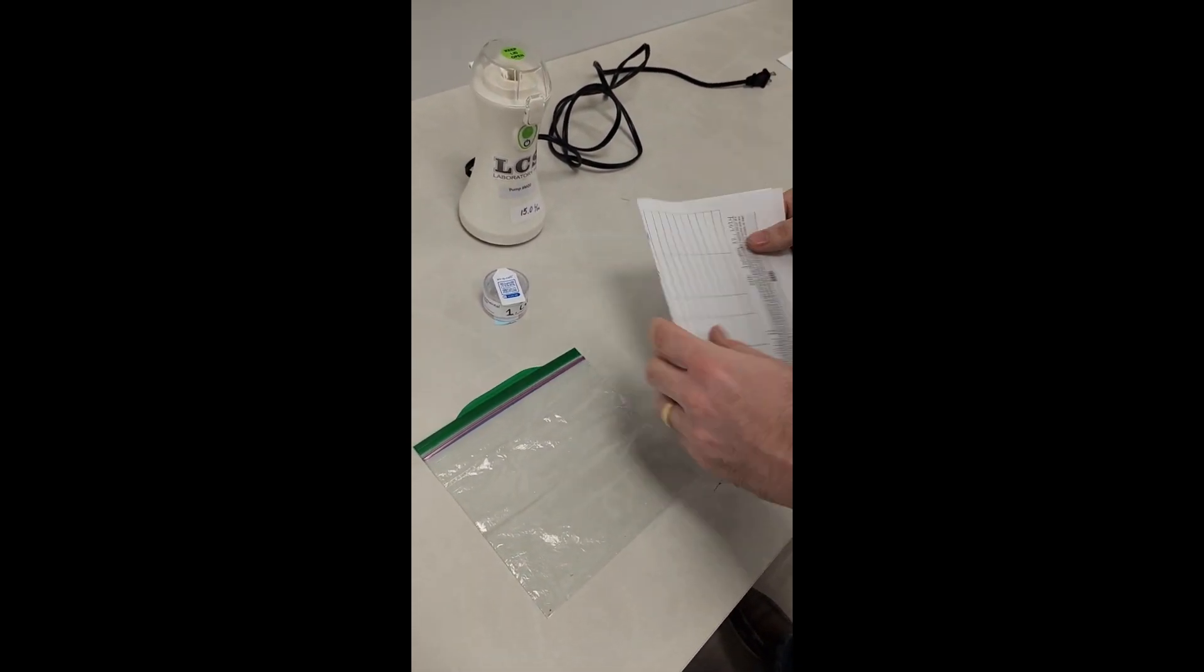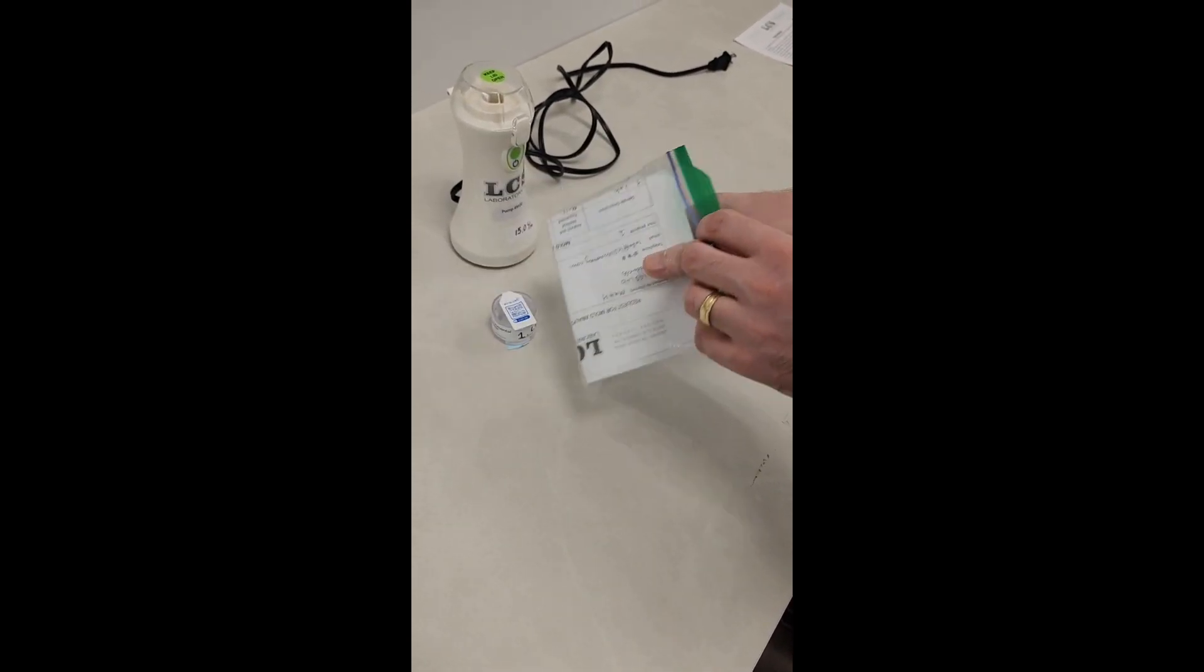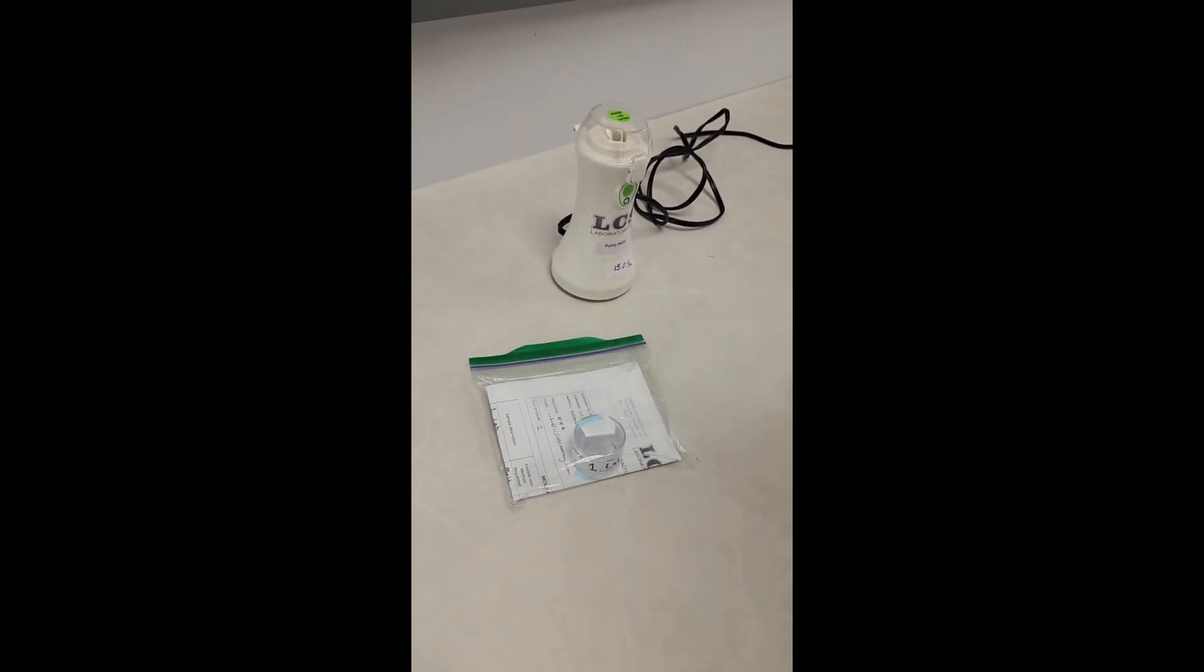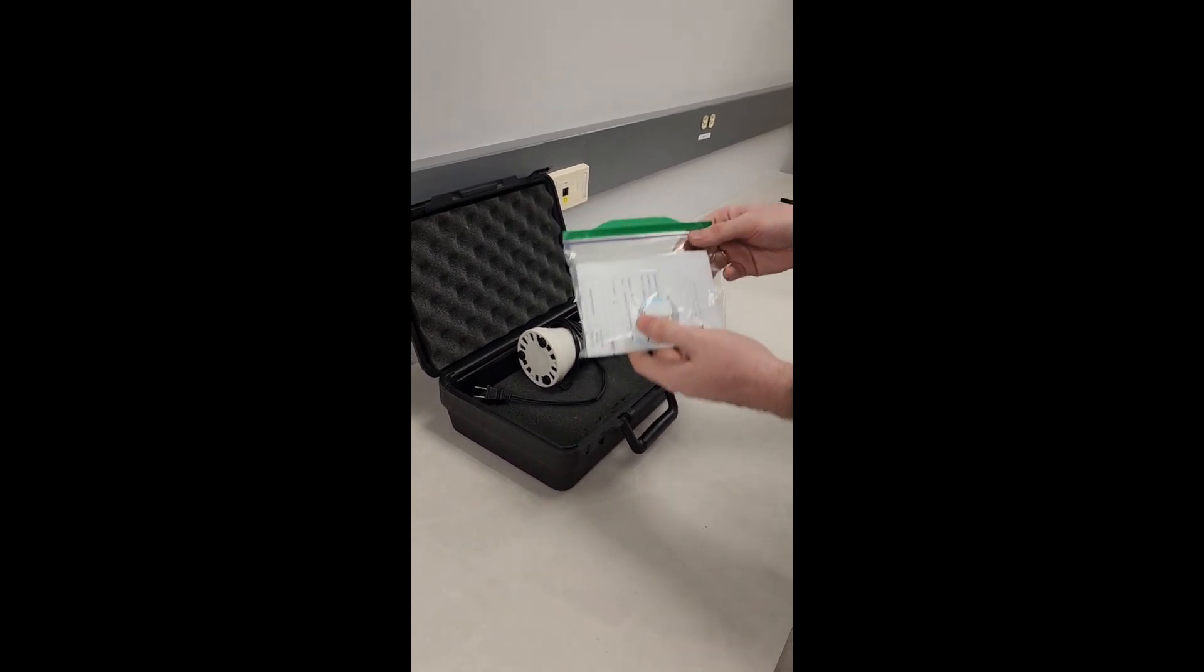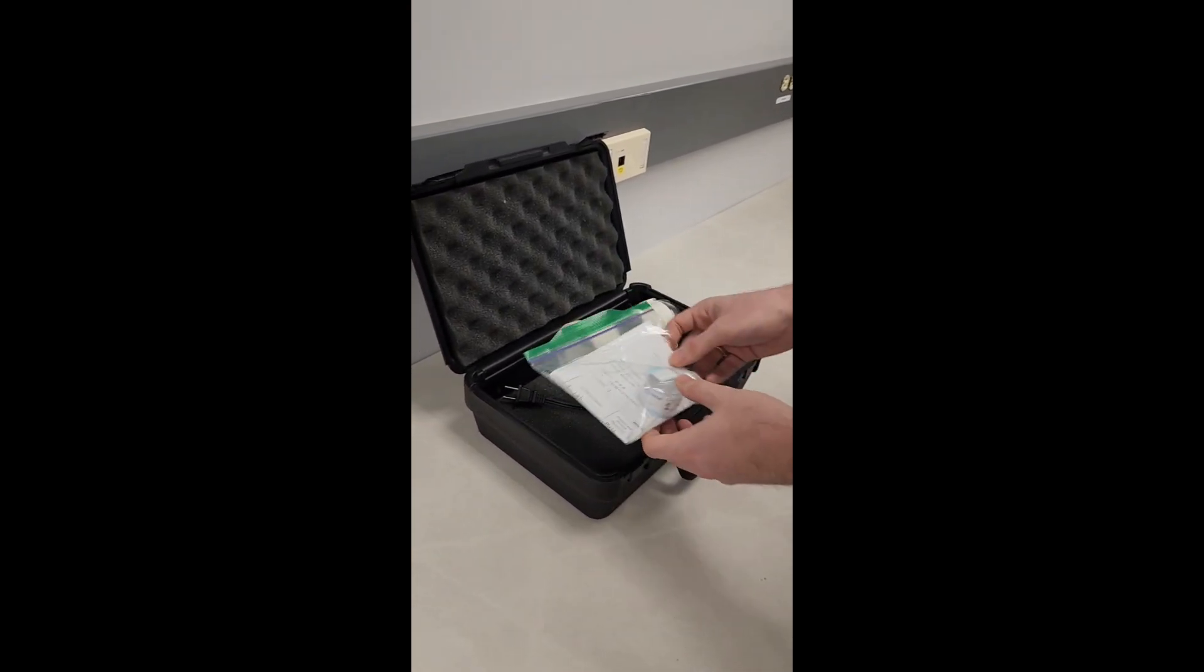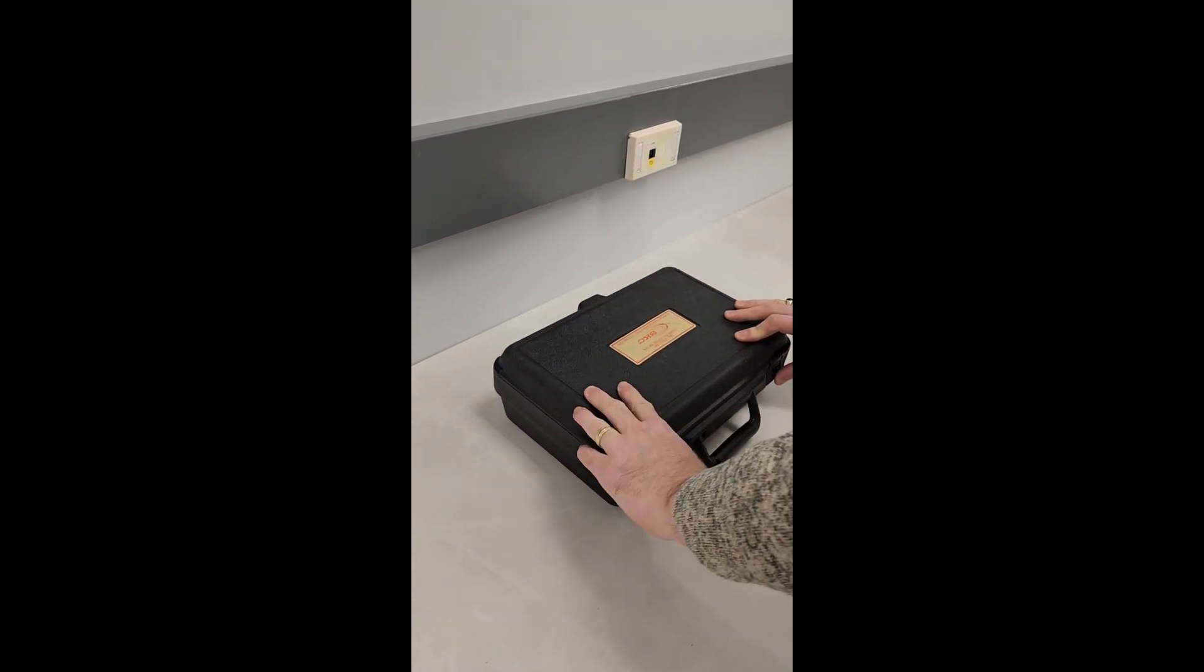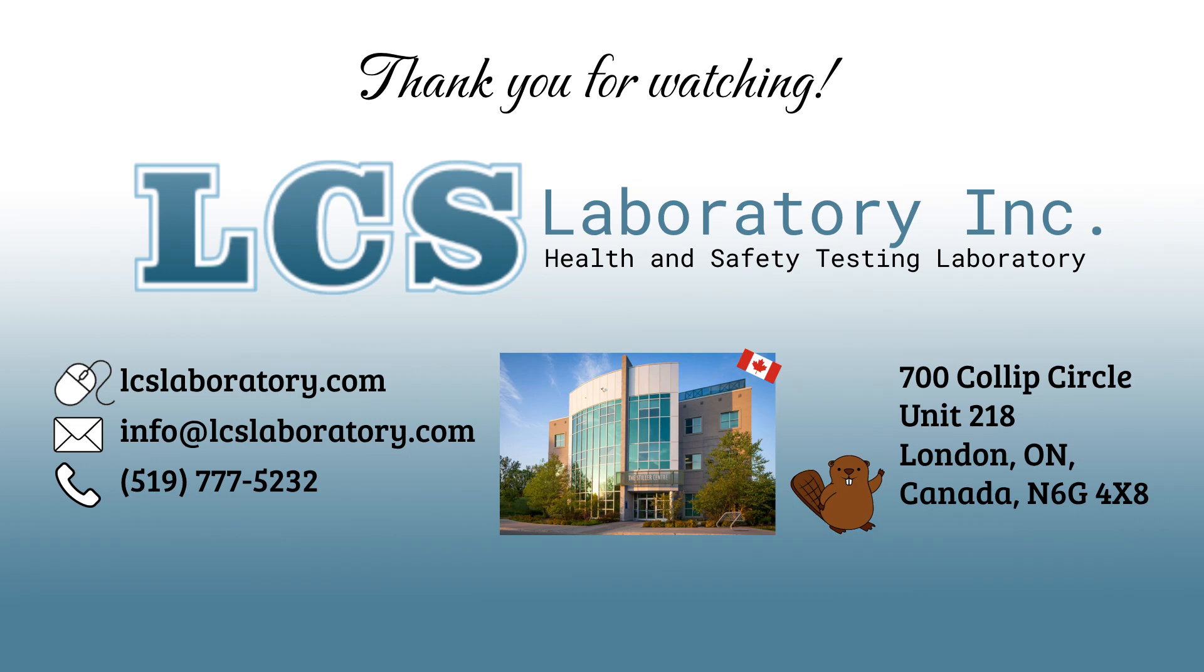Place all your cassettes and the filled out test request forms into a plastic bag. Now place everything back into the sample test kit. You can return the sample test kit back to us by mail or by using our dropbox. Once we receive the sample testing kit with your samples, we will begin the analysis for you.